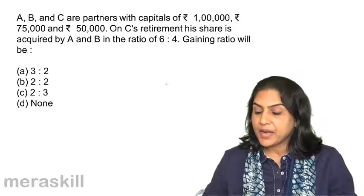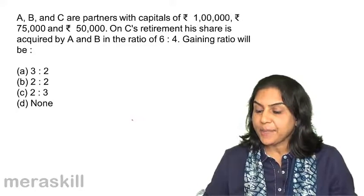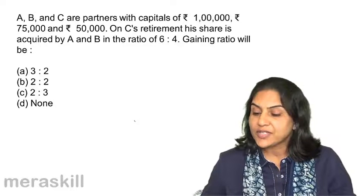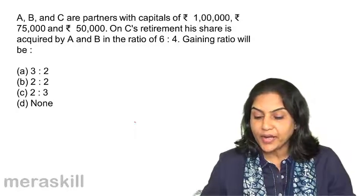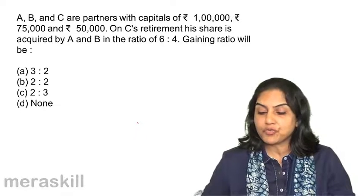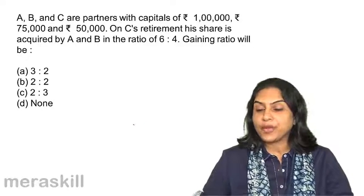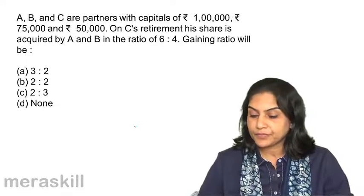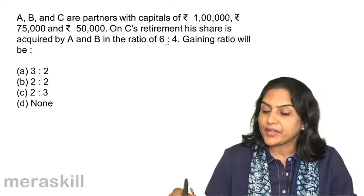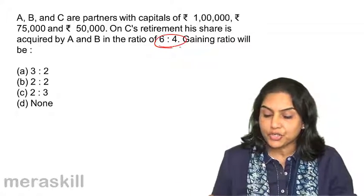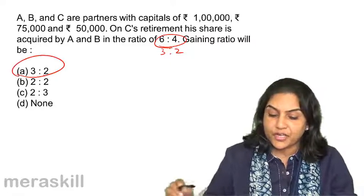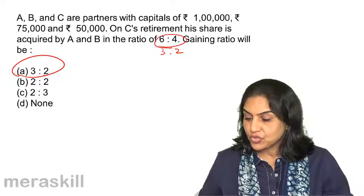A, B and C are partners with capitals of 1,75,000 and 50,000. On C's retirement, his share is acquired by A and B in the ratio 6:4. The gaining ratio is given directly — it is acquired in the ratio 6:4, which is nothing but 3:2. Therefore the gaining ratio is 3:2.